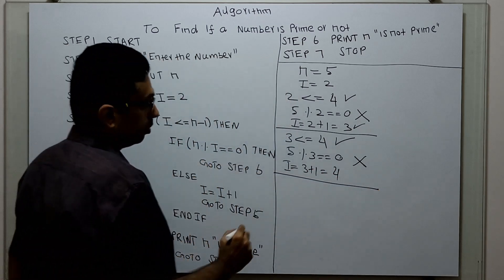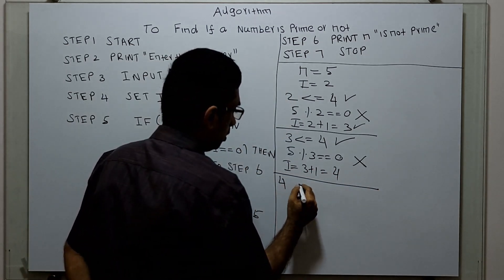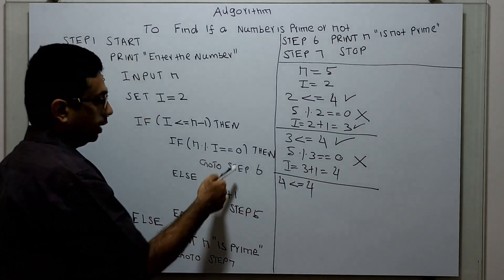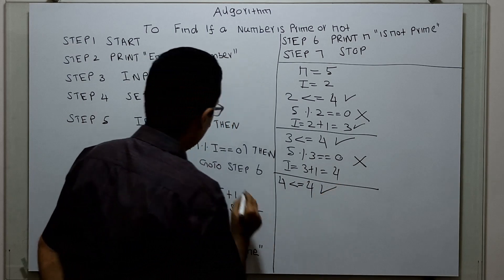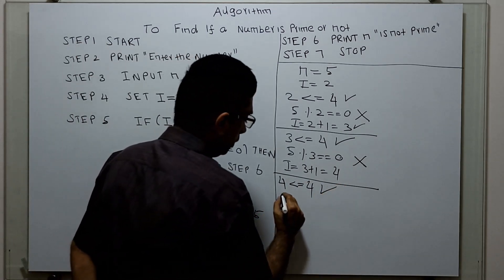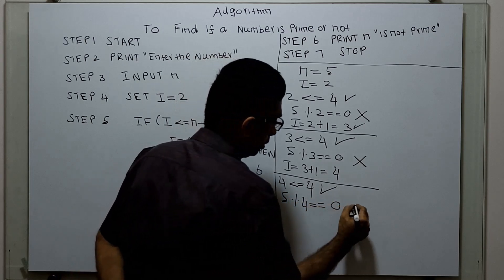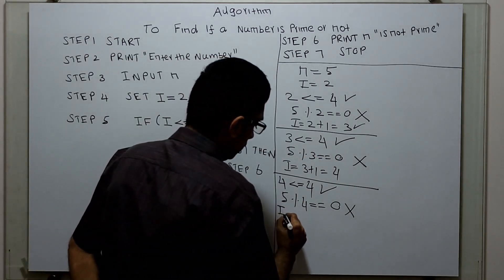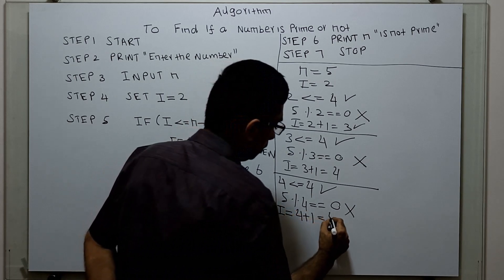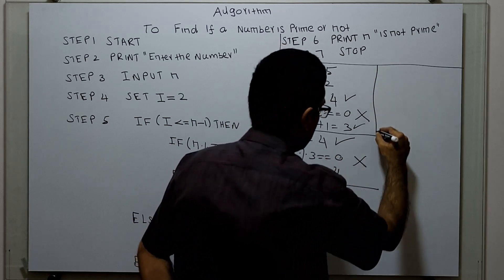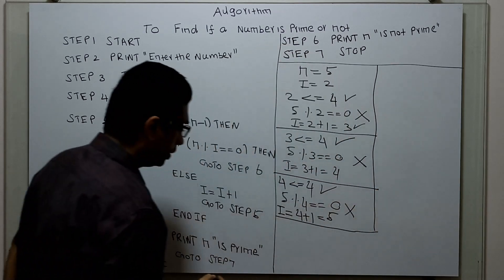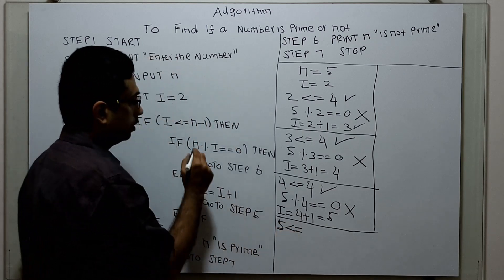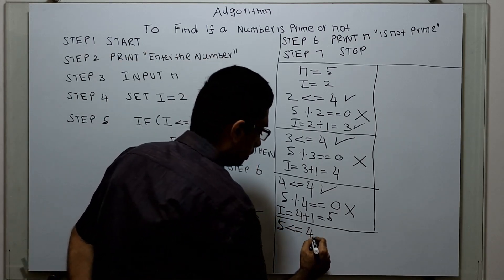Next iteration: check 4 less than or equal to 4 — the condition is true. Check 5 mod 4 equals 0 — this is false. Go to the else part and increment i by 1: i = 4 + 1 = 5. Next iteration: i=5 is not less than or equal to n minus 1 (which is 4) — this condition is false.